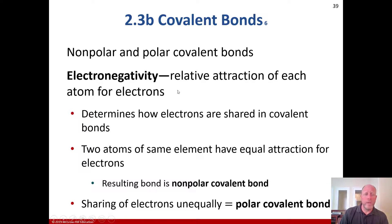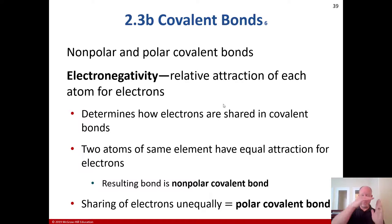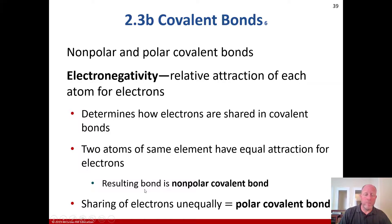For non-polar and polar covalent bonds: electronegativity is the relative attraction of each atom for electrons, and it determines how electrons are shared in covalent bonds. Electronegativity increases as you go right across rows and from bottom to top of columns on the periodic table, converging on the upper right corner where you have the highest electronegativity. Two atoms of the same element have equal attraction for electrons, and the resulting bond is a non-polar covalent bond. Unequal sharing of electrons produces a polar covalent bond.